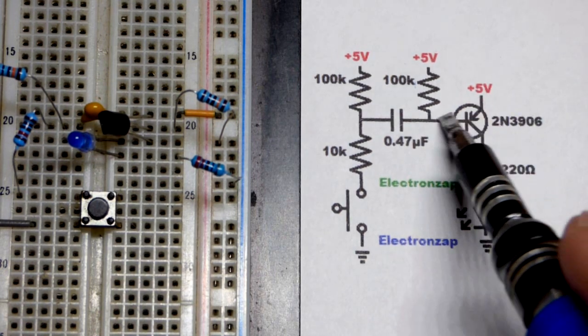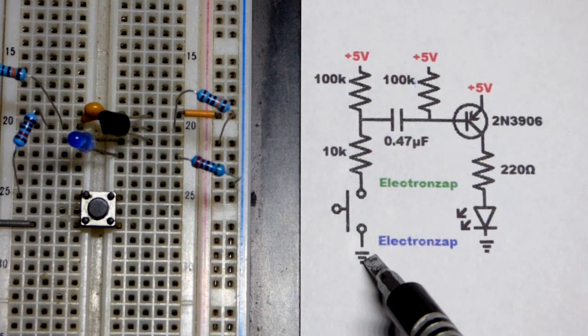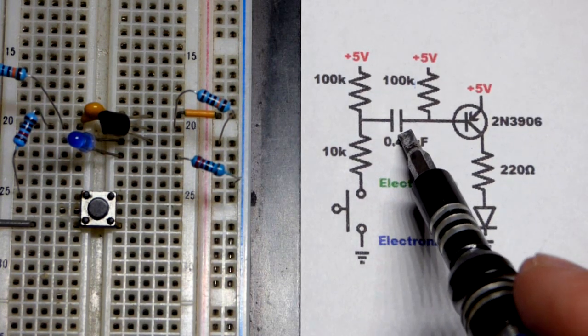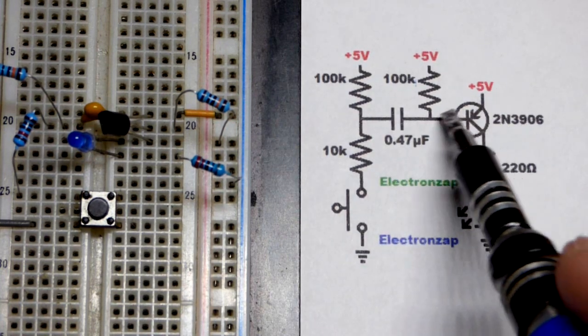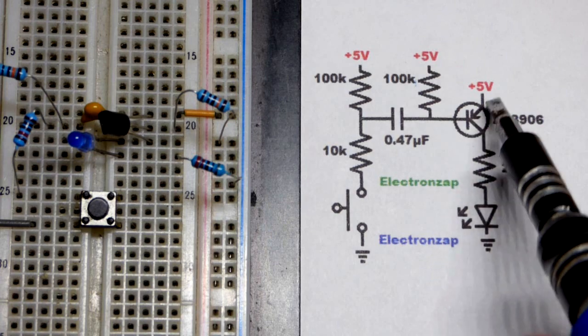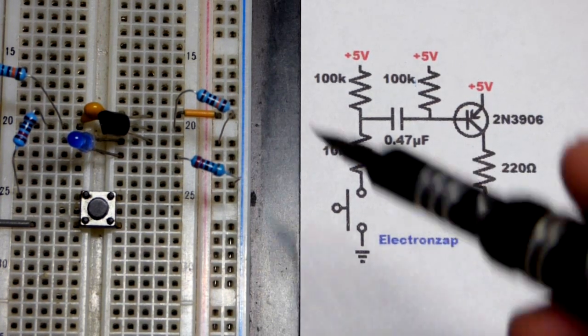When the switch is closed we connect to ground. Once the capacitor charges as much as it can, current stops completely from emitter to base and then to ground. And thus there's no more emitter to collector current. The transistor turns off.